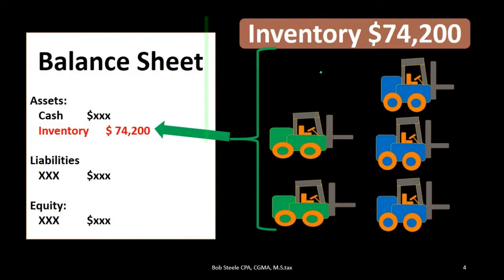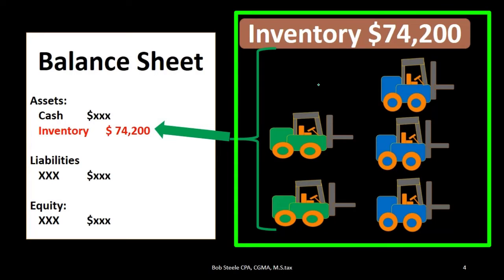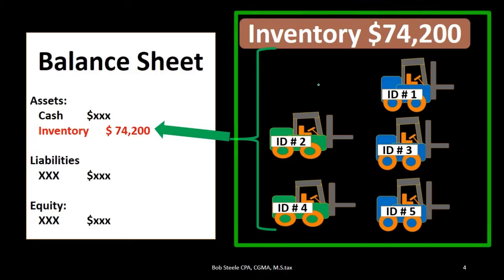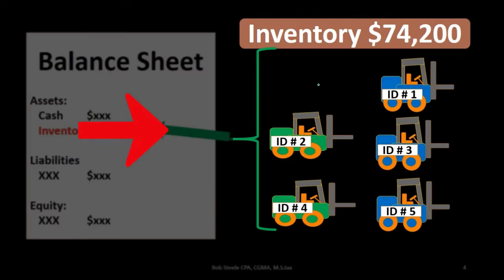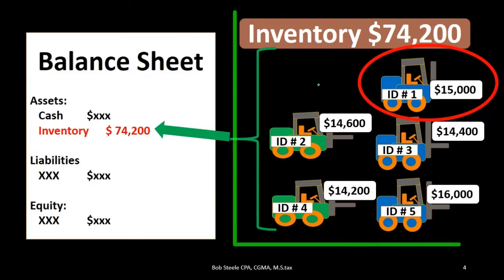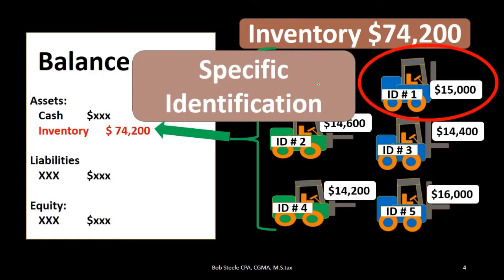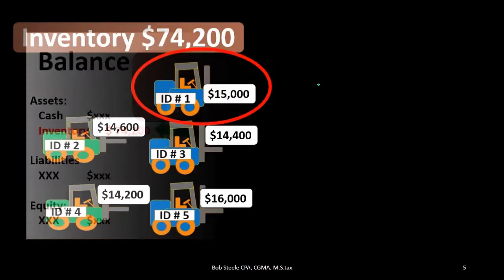If we use specific identification, we would say here are the five forklifts that make up that $74,200. We give them identification numbers and assign the exact cost we paid for each particular forklift. In that way, we can see which one we sold, see the identification number, and see the actual purchase price of that particular forklift. That would be specific identification.